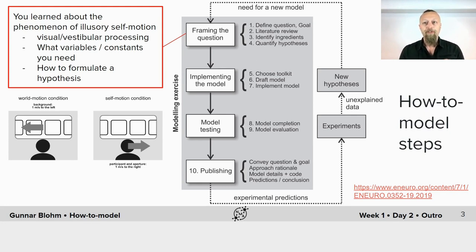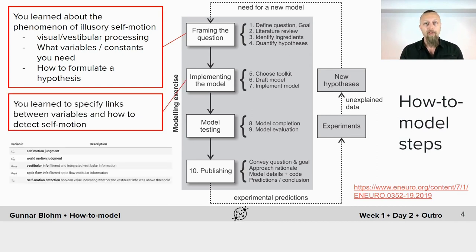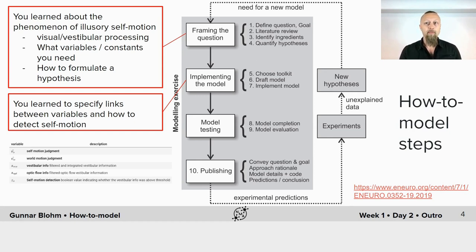So these were the first four steps of modeling — arguably the most important steps. If you get those right, there is little room for failure, because you have a precise target and specific goals to reach. With that groundwork done, you learned how to first outline and then implement the model. You learned how to specify links between variables so that you could detect self-motion. Model implementation was relatively speaking easier than framing the question, because you did a good job framing the question. Without that, you would not have known where to start and what to do.